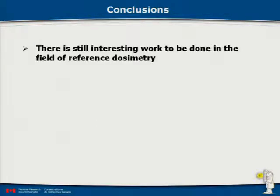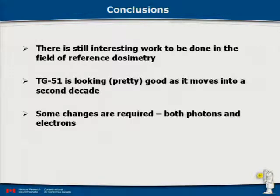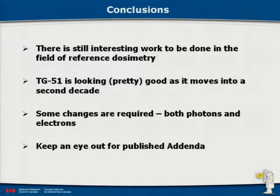To conclude: there's still a lot of interesting work going on in reference dosimetry — it's not a completely closed book. TG51, reviewed 12 years on, is still looking pretty good. Some changes are required for both photons and electrons. The changes are small for photons and will be out soon, pending AAPM approval. Electrons will follow in the next couple of years. Keep an eye out for published addenda. Thank you for your attention.